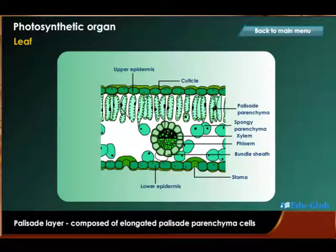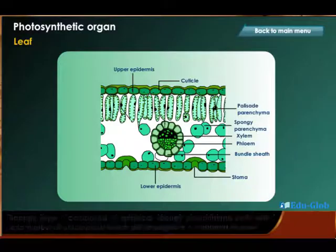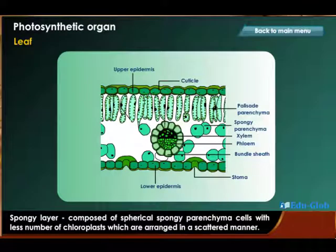One, the palisade layer, composed of elongated palisade parenchyma cells. These cells contain large amounts of chloroplasts which are arranged peripherally, and these cells are compactly packed. Two, the spongy layer, composed of spherical spongy parenchyma cells with a lesser number of chloroplasts which are arranged in a scattered manner.